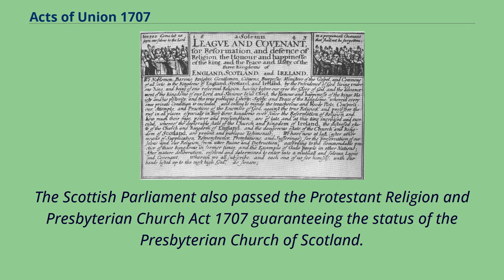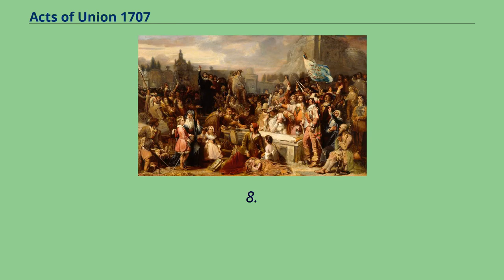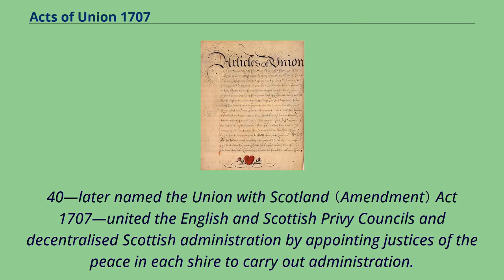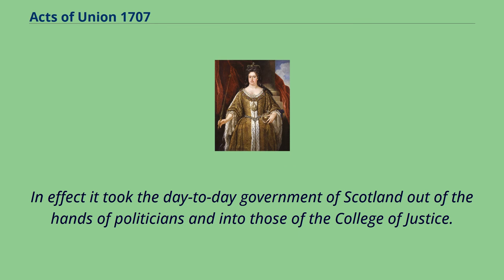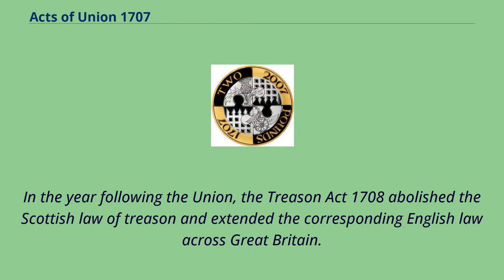The Scottish Parliament also passed the Protestant Religion and Presbyterian Church Act 1707, guaranteeing the status of the Presbyterian Church of Scotland. The English Parliament passed a similar Act. Soon after the Union, the Union with Scotland Act 1707 united the English and Scottish Privy Councils and decentralised Scottish administration by appointing justices of the peace in each shire. In effect it took the day-to-day government of Scotland out of the hands of politicians and into those of the College of Justice. On December 18, 1707, the Act for Better Securing the Duties of East India Goods was passed, extending the monopoly of the East India Company to Scotland. In the year following the Union, the Treason Act 1708 abolished the Scottish Law of Treason and extended the corresponding English law across Great Britain.